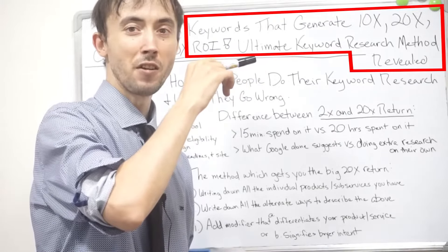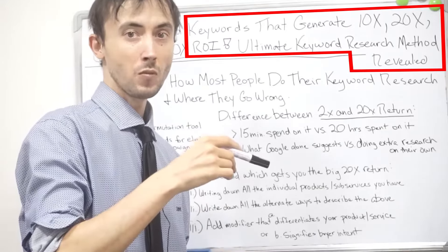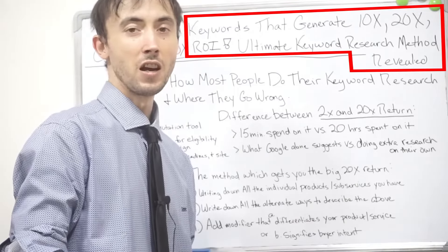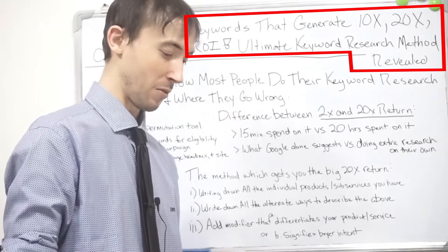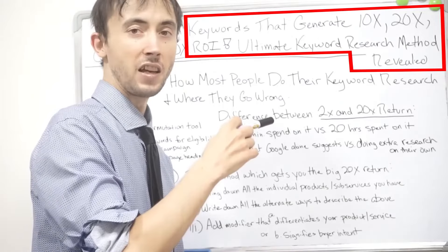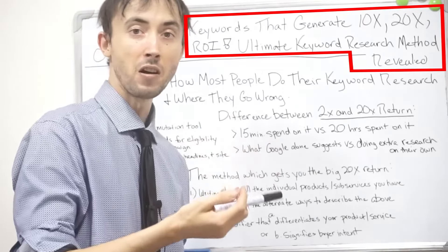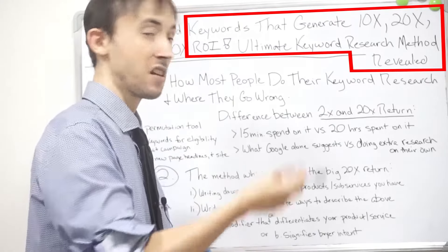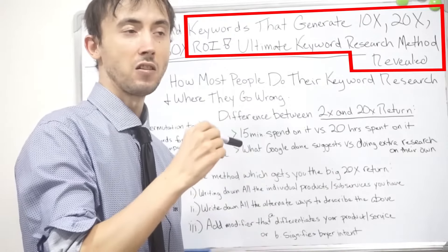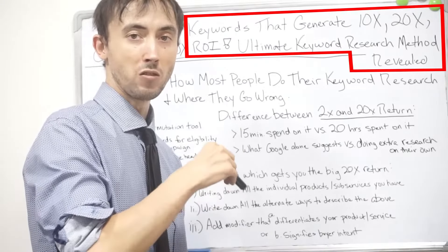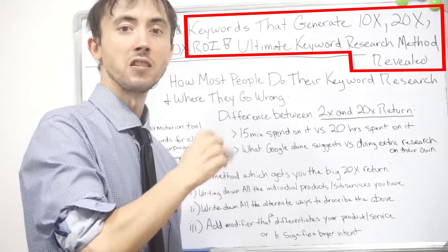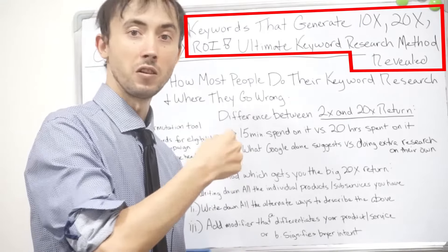That means generating a $3,000 return on a $100 budget. So with that, I'll explain how I find the keywords — a big part of getting a 30 times return on your money is really just about the keywords. I'm going to talk about the other things you need to do to accompany your keyword research to get the 30 times return, and put it in a simple format that anyone could follow.